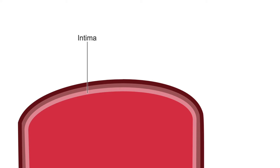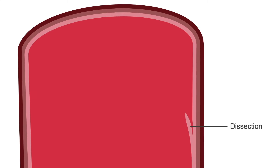An incidental finding during the screening and preoperative study may be an aorta or iliac artery dissection. Arteries have three layers: the intima, media, and adventitia. A dissection is a tear in the intima, which is the innermost layer of the wall.